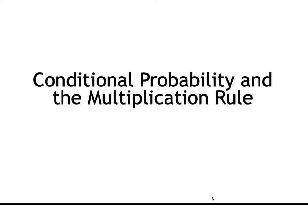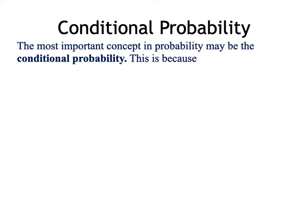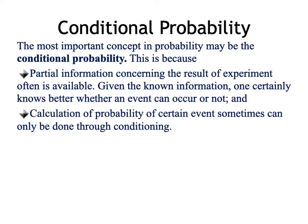In this video, we're going to cover conditional probability and the multiplication rule. Conditional probability is the most important concept in probability because partial information concerning the result of an experiment often is available. Given that known information, one knows better whether an event can occur or not, and the calculation of probability of a certain event sometimes can only be done through what we call conditioning.